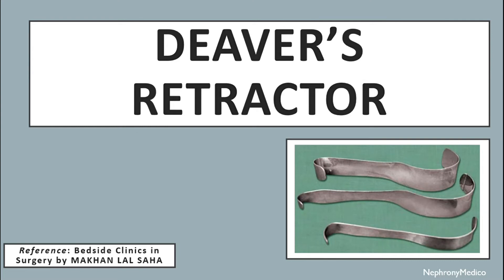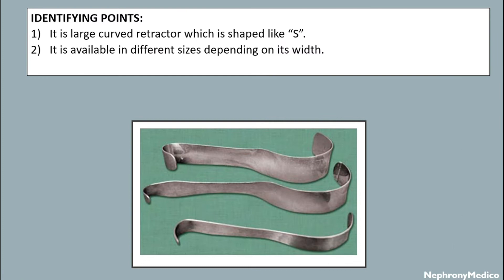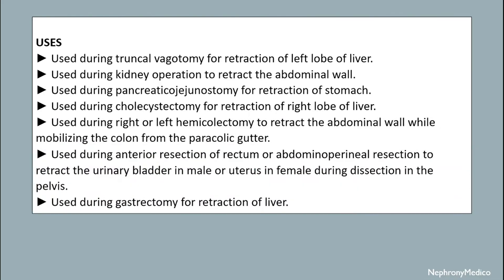This is a picture showing the Doyen's retractor with its identifying points. It is a large curved retractor shaped like an S and is available in different sizes depending on its width.